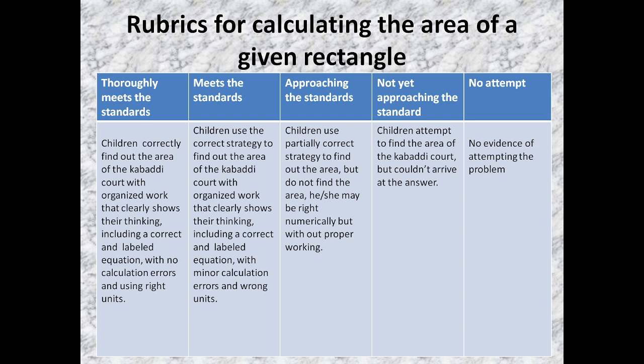Now, if we want to teach us to frame the rubrics for calculating the area of a given rectangle. And here, there is a rubric. See, we need to make the rubric on a point-wise scale. Here, it is a 5-point scale. See, if you see the rubric, these 5 points are: The first one is thoroughly meets the standard. That is, level 1 or 5. You can give number also or level. The second level is meets the standards. And third one is approaching the standards. Fourth one is not yet approaching the standard. And fifth one is no attempt. So, we will have these type of children in our class.